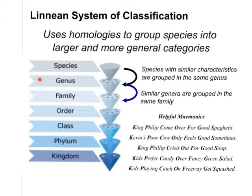When we put species with similar characteristics together in the same group, that becomes a genus. Similar genera, when we put those together, will become a family. Similar families grouped together will be an order. We put similar orders together to make a class, and similar classes to make a phylum, and similar phylums to make a kingdom.